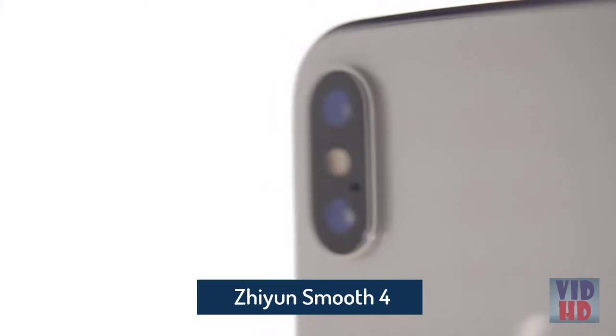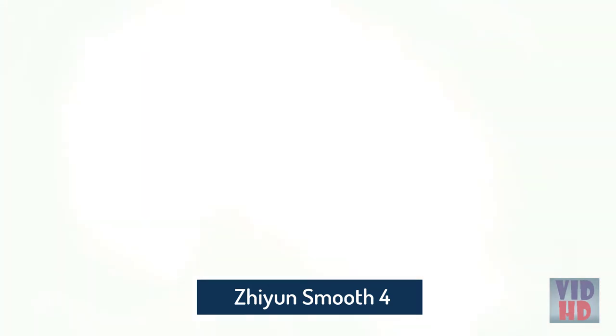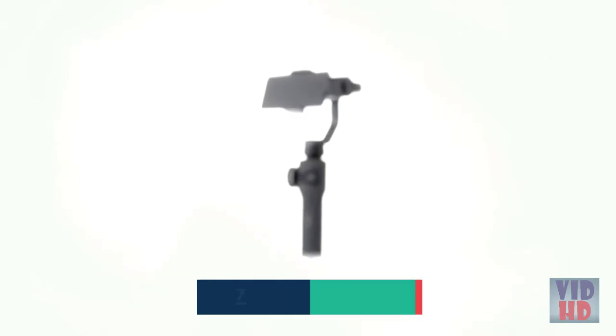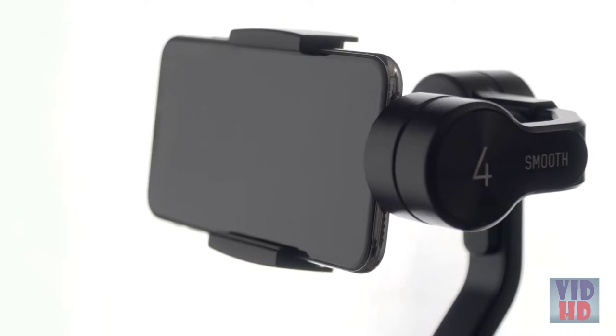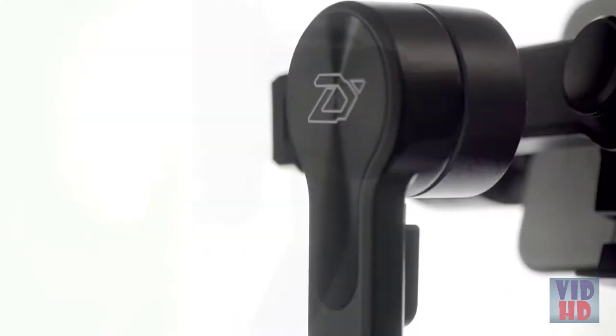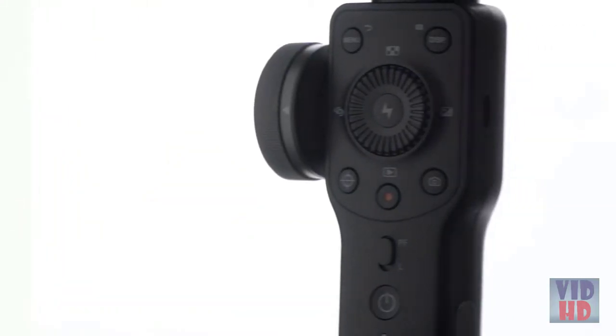There has never been a better time to create photo and video content than today. Smartphones offer up some incredible image quality and they deserve a proper companion for your photo and video adventures. This is Smooth 4, a product born for mobile filmmakers. Smooth 4 is a radical new innovation from Zhiyun that enables you to swiftly access your phone's camera settings at the push of a button.